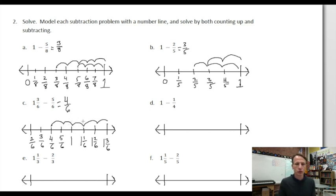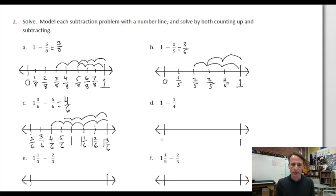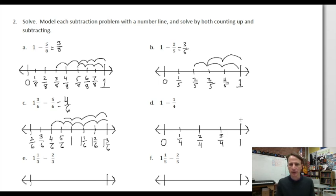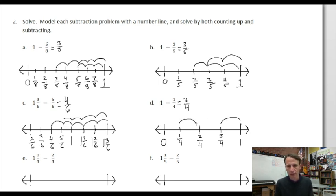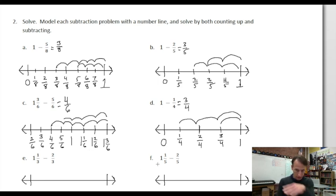For 1 minus 1/4: we start with 1 at the top, 0 at the bottom. The halfway point is 2/4, and it's easy to place 1/4 and 3/4. Subtracting 1/4 from 1 gives an answer of 3/4. Counting up from 1/4, that's also three jumps — 3/4. Same answer both times.